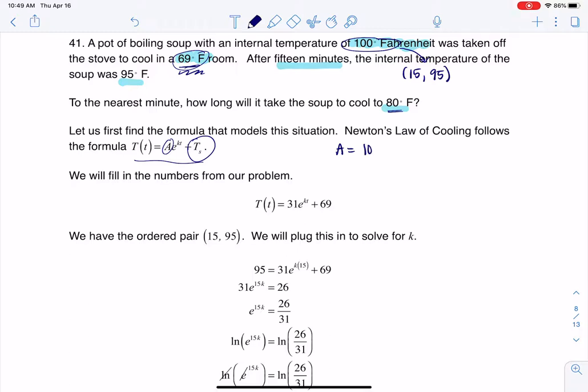So the temperature of the soup was 100 degrees and the surrounding temperature was 69 degrees, so my a value is going to be 31. There I am plugging in my a value and my T sub s to Newton's law of cooling, and I always want to get this k value, that's what I want to do.